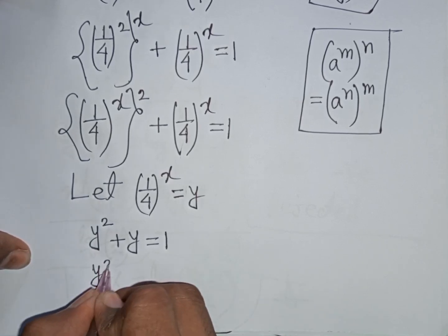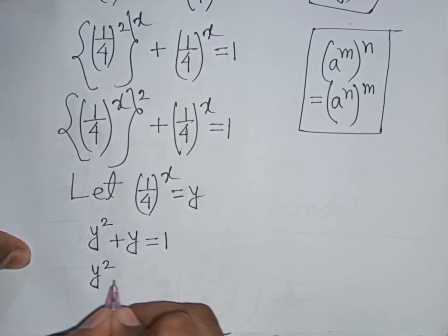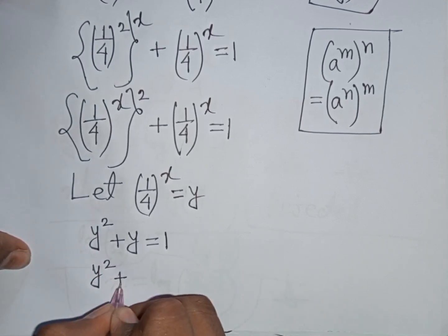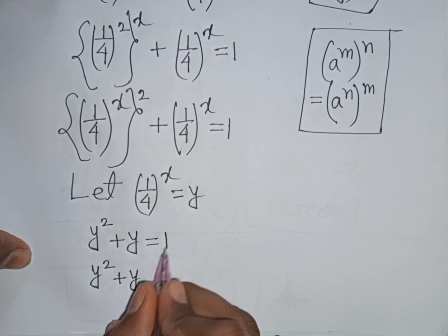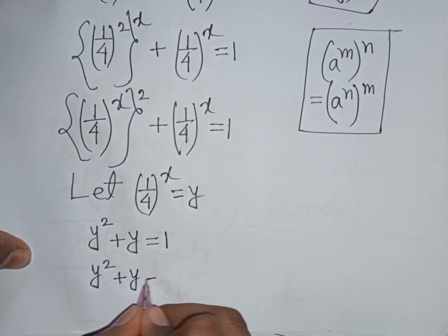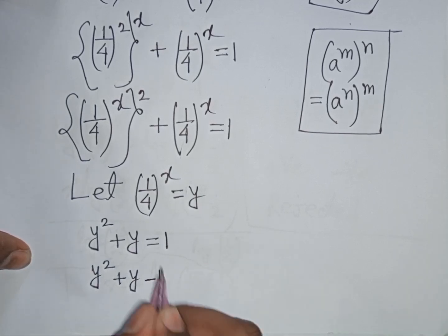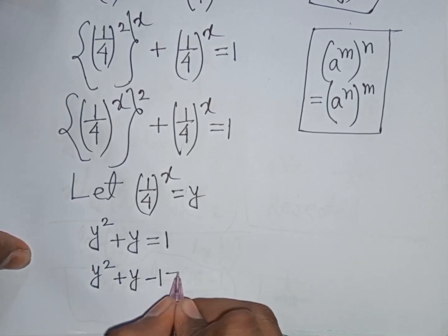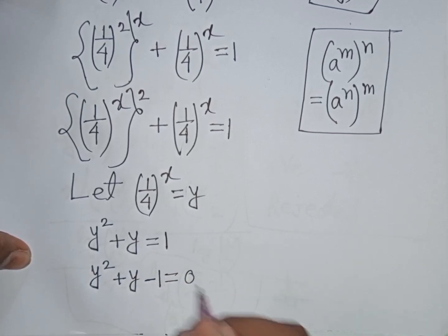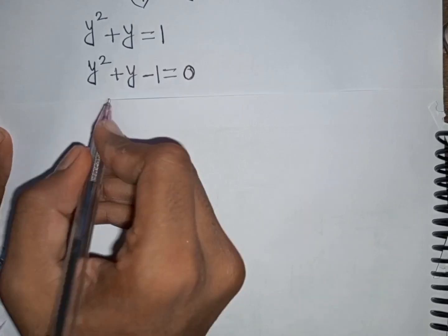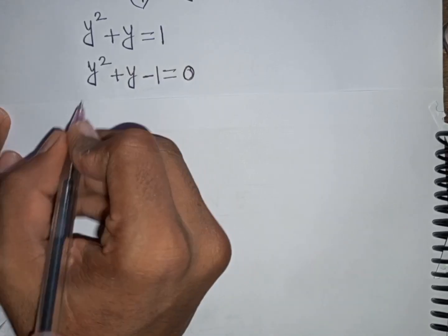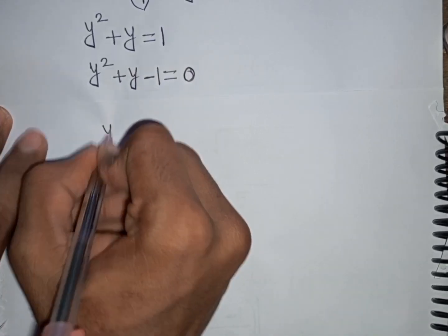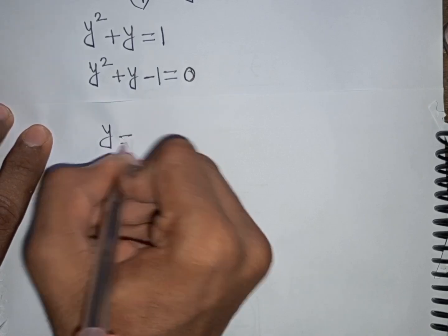Our equation becomes y squared plus y equals 1, which we rewrite as y squared plus y minus 1 equals 0.